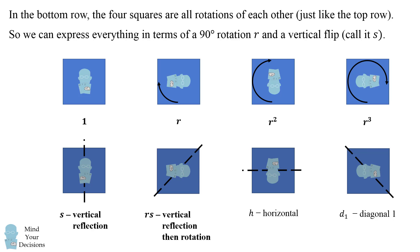The third element in this row can be written as R squared S. This is a vertical reflection and then two rotations. The final diagram is R cubed S. This is a vertical reflection and then three rotations.